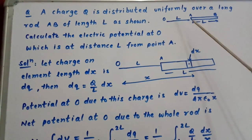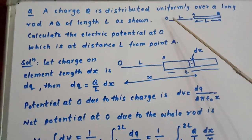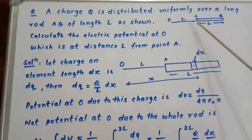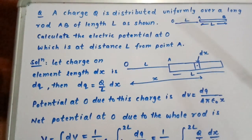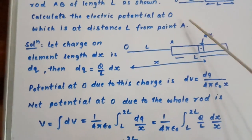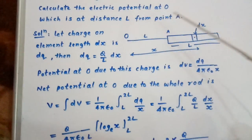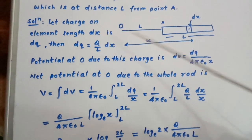This is the point where electric potential is to be found, which is at distance L from point A. Calculate the electric potential at O which is at distance L from point A.